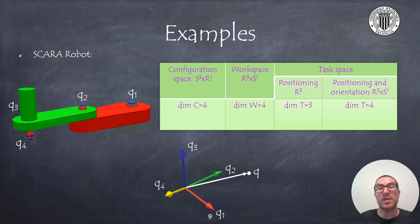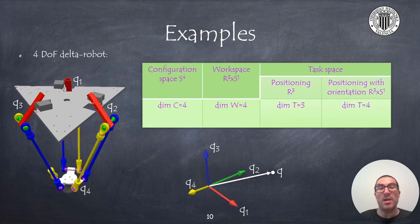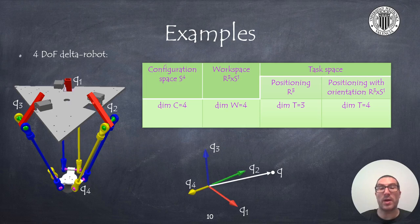The configuration space of a SCARA robot is a subspace of S3×R1. The dimension of the generalized coordinate vector is 4, with three angular coordinates and one displacement coordinate. With the SCARA robot, we can perform tasks of dimension 3 for positioning, or position and orientation tasks of dimension 4. The workspace in this case is R3×S1. For the delta robot with 4 degrees of freedom, the configuration space is a subspace of S4 with a generalized coordinate vector of dimension 4, all angular. The workspace is the same as the SCARA robot, R3×S1, and similarly this robot can perform the same kinds of tasks.